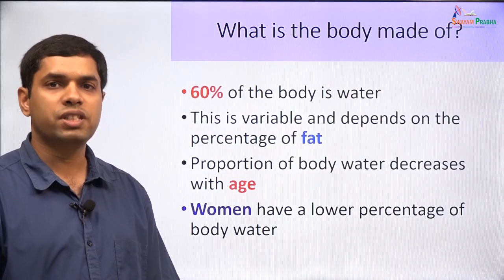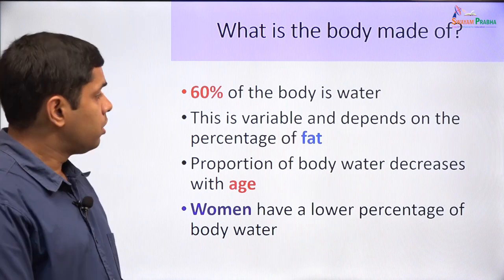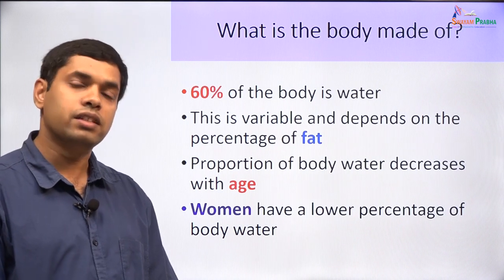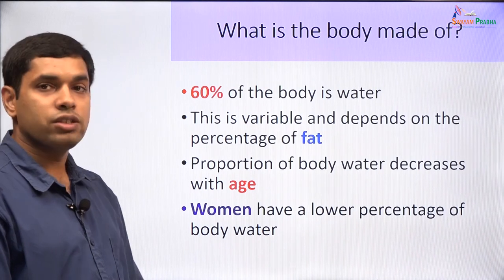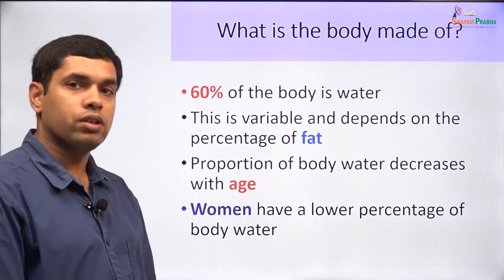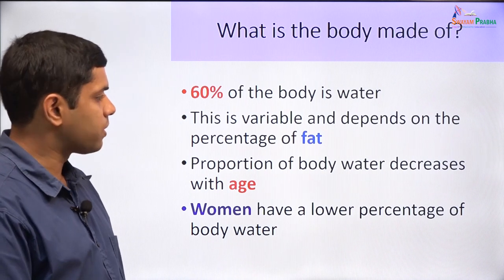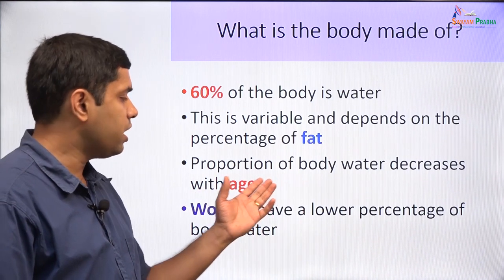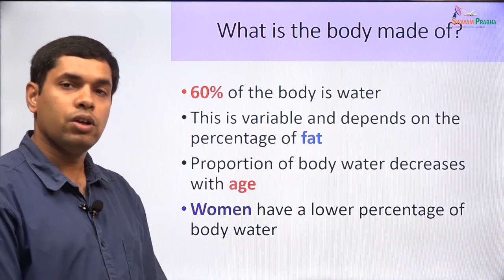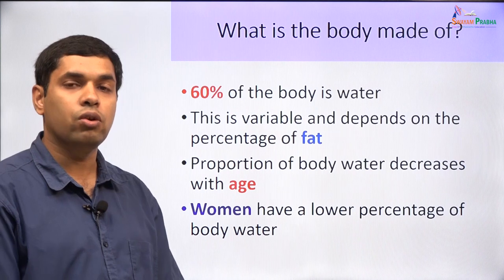The 60% of body water is not an absolute value and there are many variations of this percentage. It depends on the percentage of fat — fat is relatively free of water, so the greater the proportion of fat, the lower will be the proportion of body water. Women also have a lower proportion of body water, attributed to a larger proportion of subcutaneous fat. As a person increases in age, the proportion of body water also decreases.